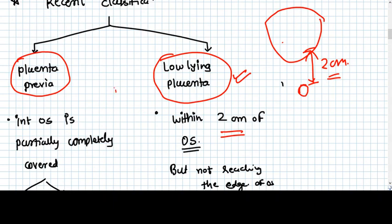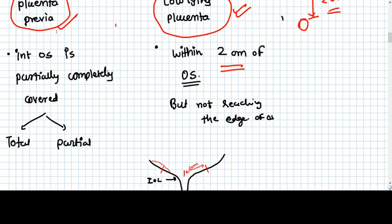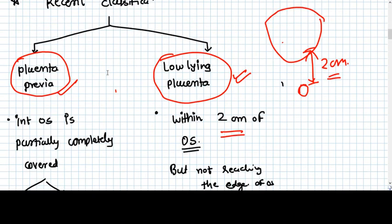But if it is placenta previa, that means the internal os is partially or completely covered. In both cases we are going for cesarean section. Either it's partially covered or totally covered, the management is not different. This is why we classify anything in medicine.